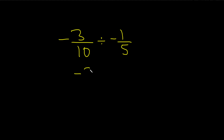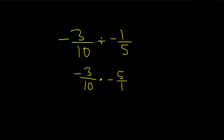This is negative 3 over 10, and then times — change it to a times — and then you flip this one, so it's negative 5 over 1. Step 1 again was change the division to a times, and then you just flip this fraction.